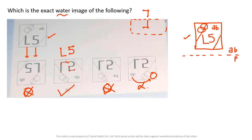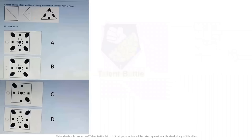To solve water images, focus on the figure and check the alignments — alignments are very important. Also check which side elements are on and where they will be in the water image. Now moving to the next question — another paper fold and cut. You now know both the general method and the paper method. Pause the video and try it yourself, then confirm your answer. The first fold is up here and the second fold is up here.